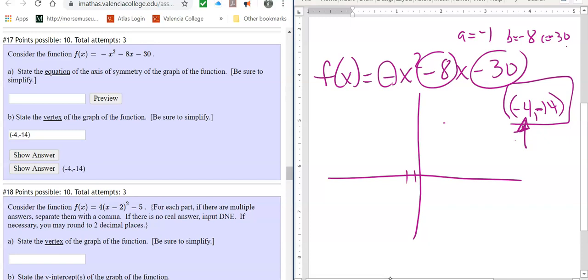Okay? So what that means is my vertex would be at negative 4. And assuming these are 2s, so let's assume this is negative 2, and this is negative 1. All right, so negative 4, negative 14, it's down here. Okay? And I know that my parabola is sad, because it's got a negative a. So it's going to be like this. Right?